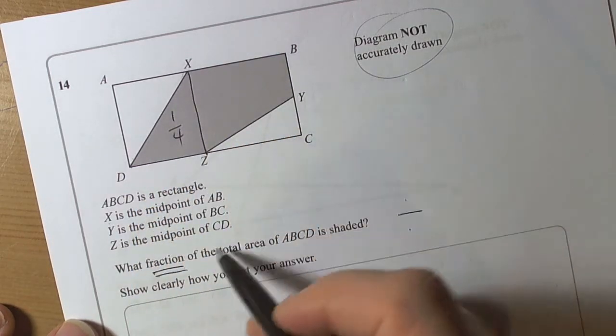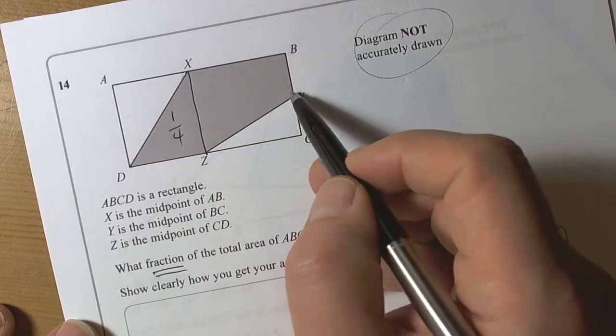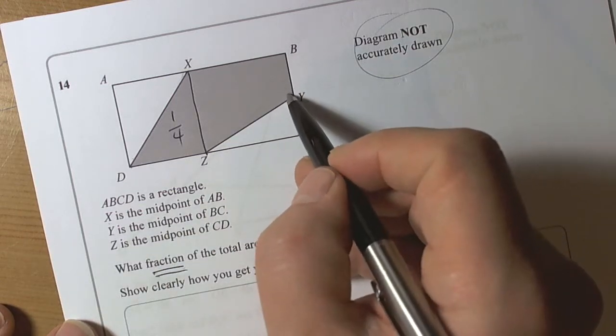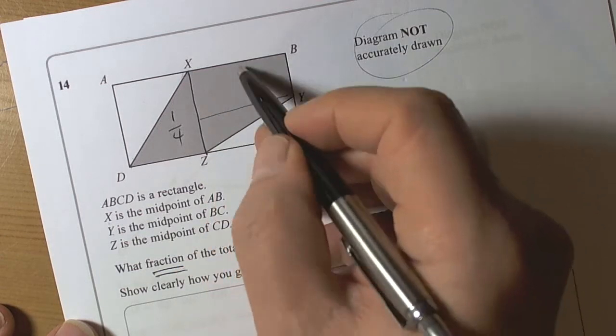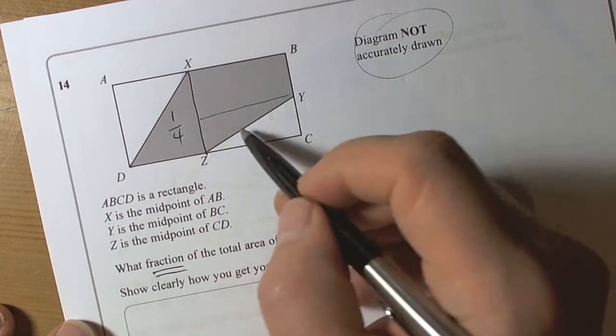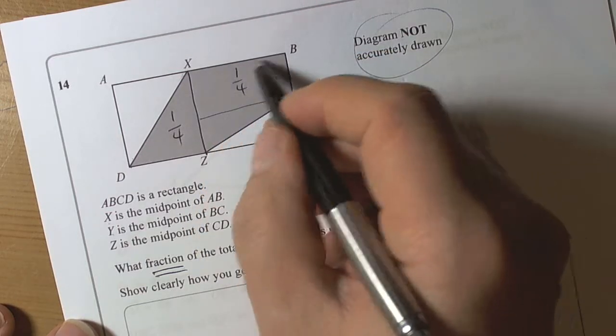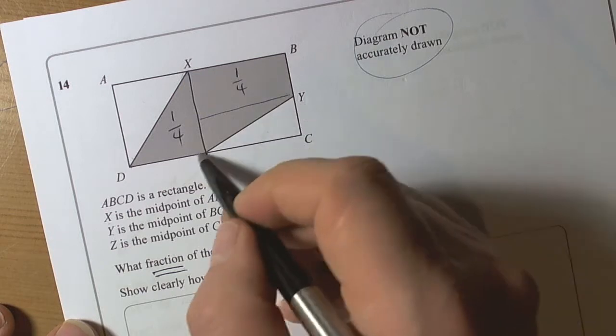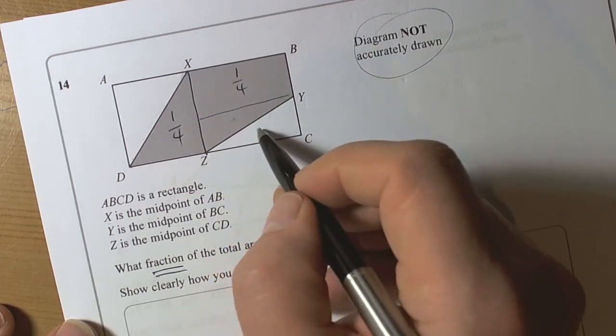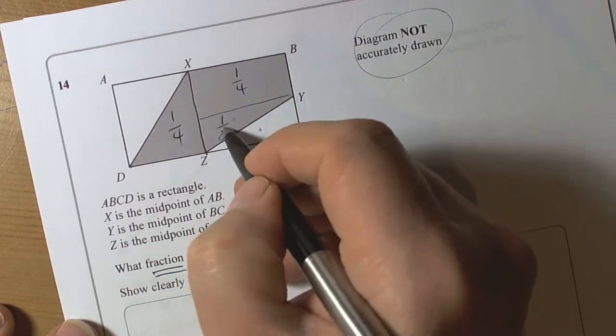We then can see from the other information that y is the midpoint of BC. Well, if it's the midpoint of BC, then because this is a half of the whole rectangle, then this must be a quarter of that part, and because this is split by the diagonal here, then this must be a half of a quarter, so this bit here must be one eighth.